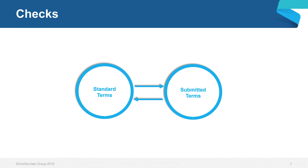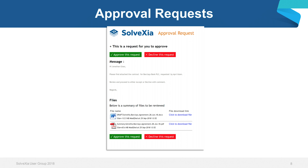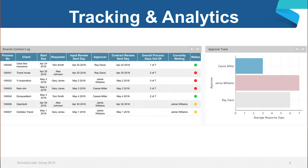Approval requests ensure that the right authority has control over the process where their expertise is needed most. Then we have tracking and analytics, which provides a way to record the process from A to Z — from time of creation to response rate and version control history. The process can live in your database and can be viewed transparently.